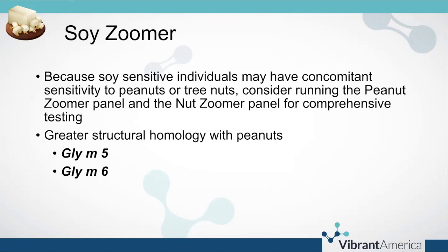There's also a good degree of homology between certain proteins in soy and those in peanuts and tree nuts. Specifically, GLI-N5 and GLI-N6 — when you see these antibodies elevated on your patient's report, it might be a good idea to run a peanut zoomer or a nut zoomer to see if there's some type of cross reactivity between these foods for that particular patient, due to the structural homology between these proteins and those in peanuts and tree nuts.